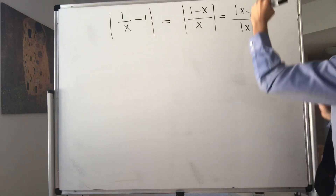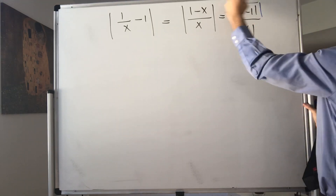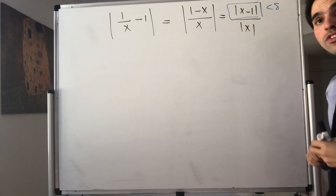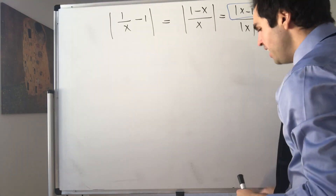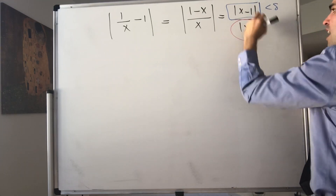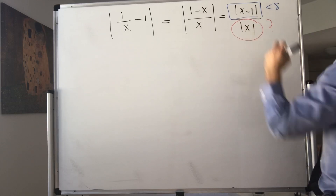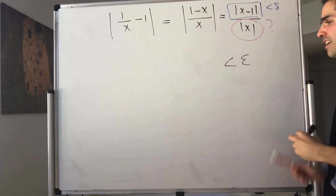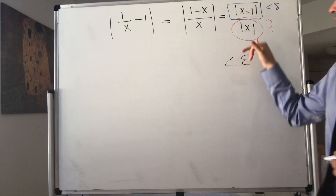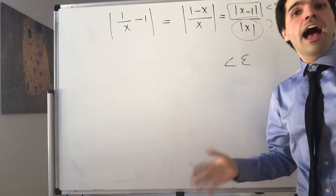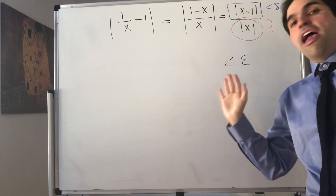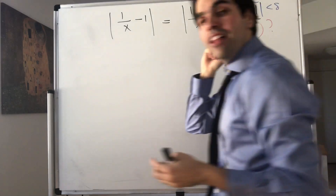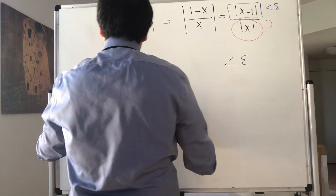Remember, the numerator is good because we can make |x − 1| less than delta — we have complete control over this. So ideally we want to have control over |x| to make the whole expression less than epsilon. Before, in other proofs, we assumed x was less than something, but here we actually want |x| to be greater than something.